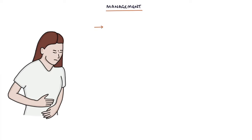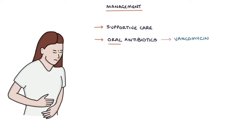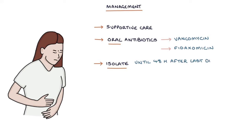Let's talk about management. Management involves supportive care and oral antibiotics. The options for oral antibiotics are oral vancomycin, which is first line, or oral fidaxomycin, which is second line. Patients need to be isolated until 48 hours after the last episode of diarrhea. It's worth mentioning there's a high recurrence rate, so after treatment the infection can reoccur.